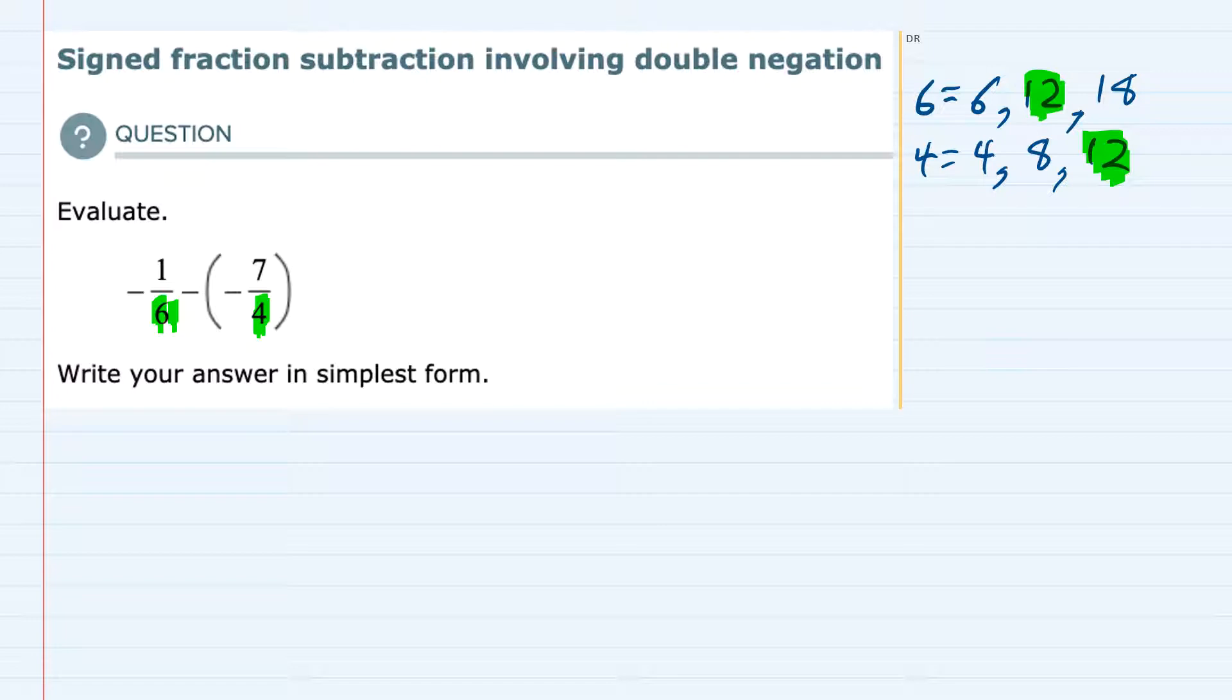Starting with the first fraction, in order to turn the 6 into a 12, I would need to multiply by 2. And I can do that in the denominator as long as I also multiply the numerator by 2.